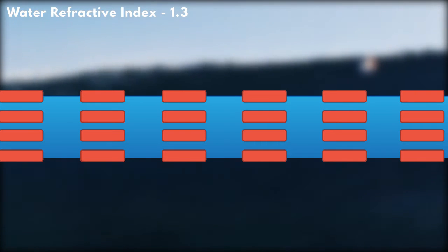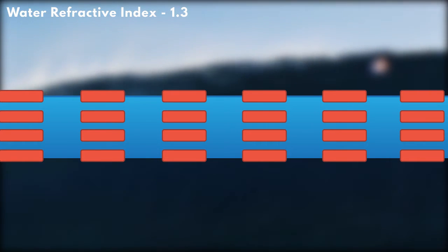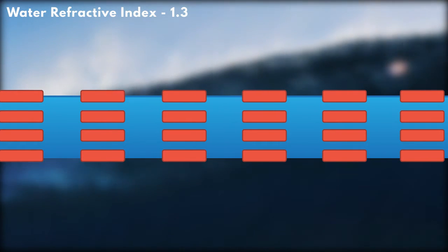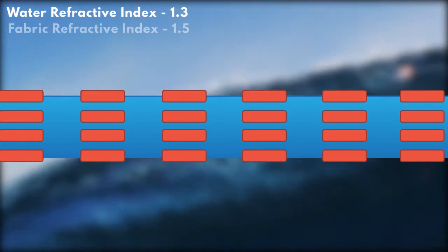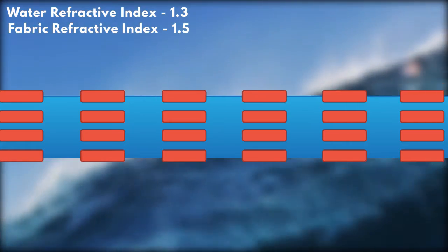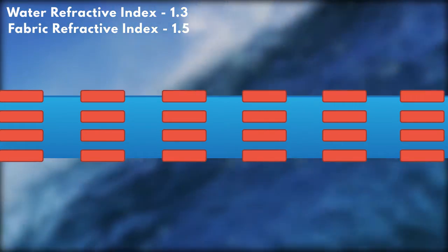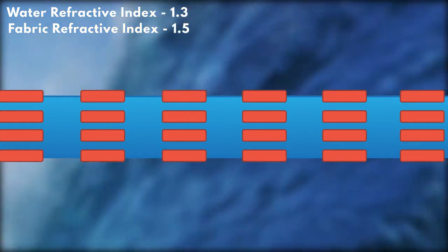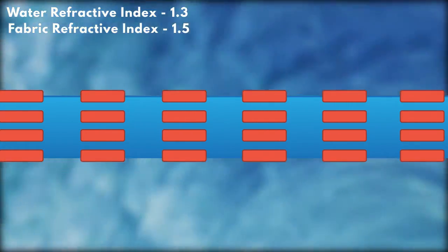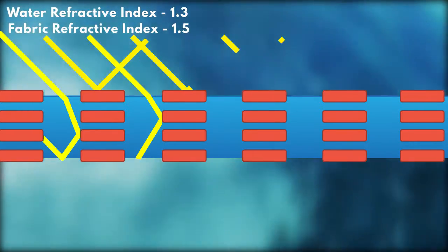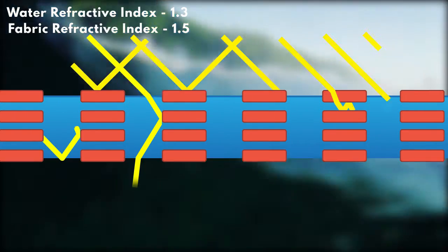Now when you add water, the water molecules will displace the air inside the pores. This is important because water has a refractive index of N equals 1.3, which is closer to that of the fabric, N equals 1.5. Due to the reduction of the refractive index mismatch, less light is scattered before entering the material.